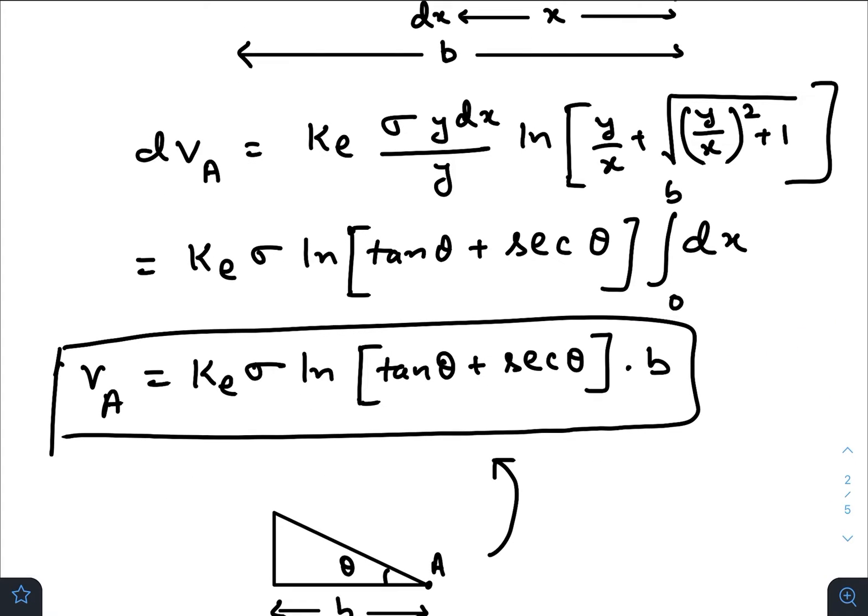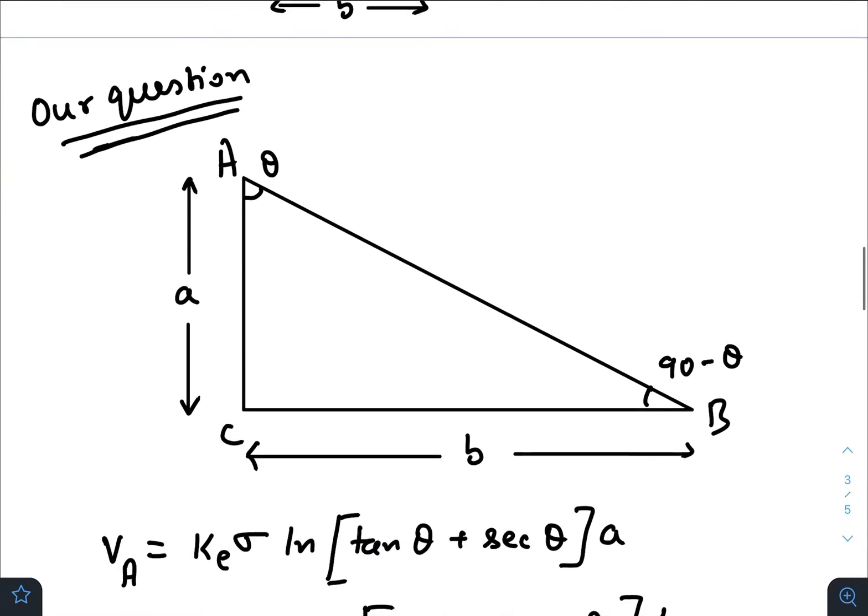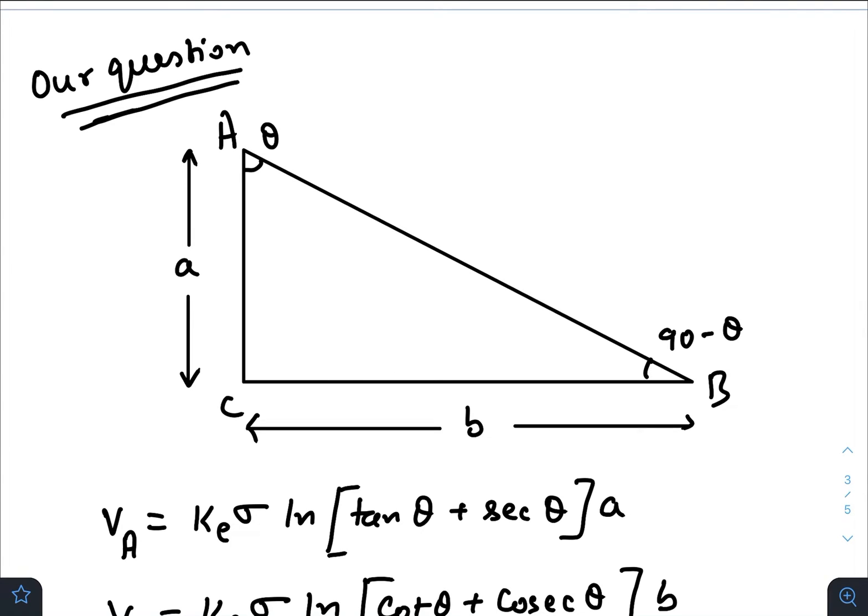I am just drawing the diagram once again. Just take a deep breath, and now we will jump into our actual question. In our actual question, we need to write the potential of point C with respect to V_A and V_B. So here the angle theta is given, so this angle would be 90 minus theta. This is our right angle.